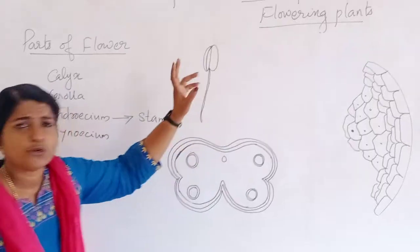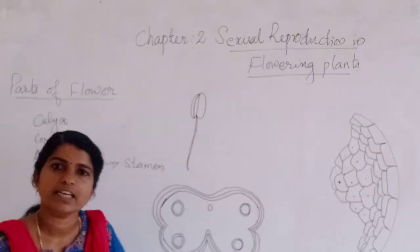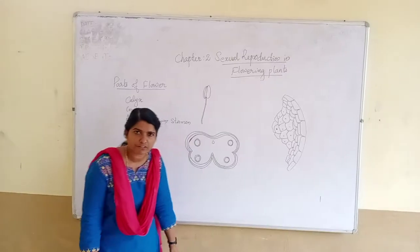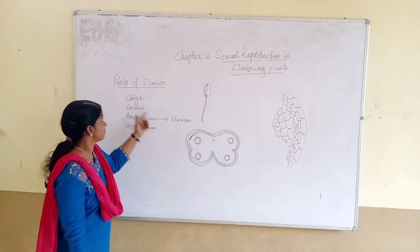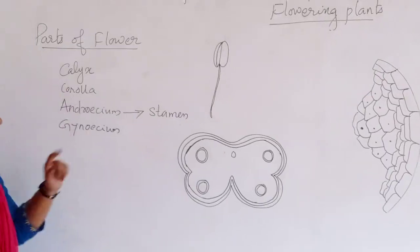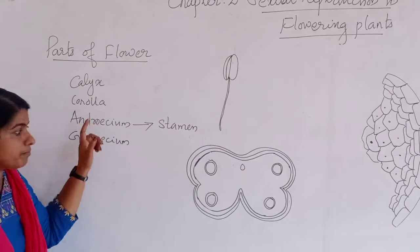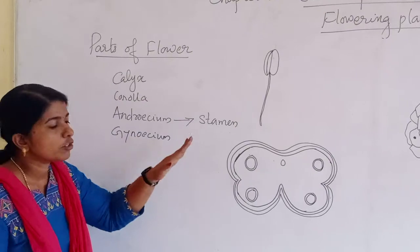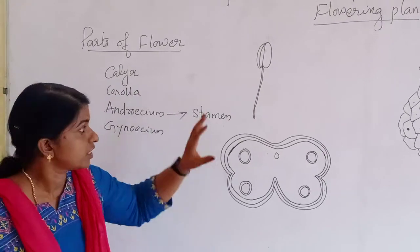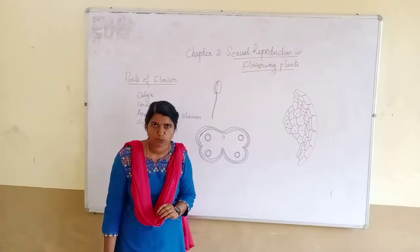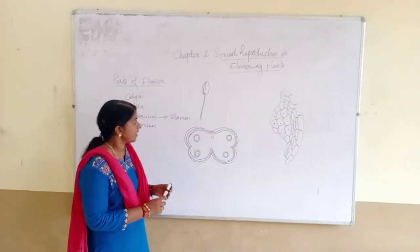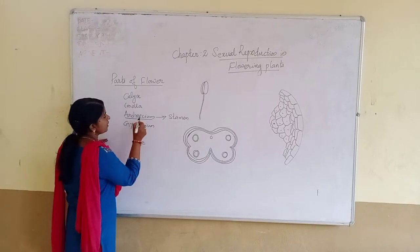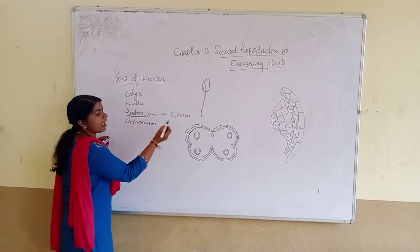You know, the flower is the reproductive part. We won't go into detail about the different parts of the flower. Today we focus on the main reproductive part, which is the stamen.